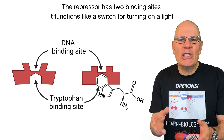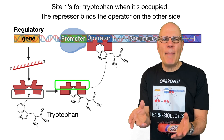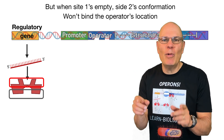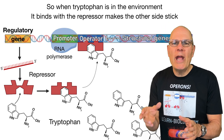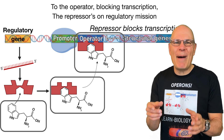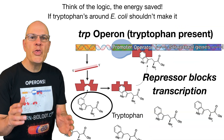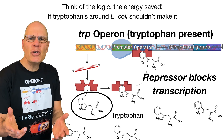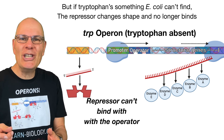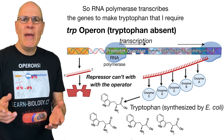The repressor has two binding sites. It functions like a switch for turning on a light. Site 1 is for tryptophan — when it's occupied, the repressor binds the operator on the other side. But when site 1 is empty, site 2's conformation won't bind the operator's location. So when tryptophan is in the environment, it binds with the repressor and makes the other side stick to the operator, blocking transcription. That repressor is on a regulatory mission. Think of the logic, the energy saved: if tryptophan's around, E. coli shouldn't make it. But if tryptophan is something E. coli can't find, the repressor changes shape and no longer binds.